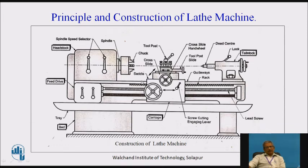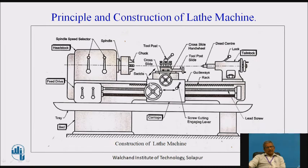The carriage is made up of different parts: the apron or apron box, and the saddle — which has a V-groove on one side and a flat surface on the other, preventing perpendicular movement. When we move the carriage with the carriage wheel, it travels parallel to the axis using a rack-and-pinion arrangement, moving the carriage towards the headstock or tailstock. On the saddle, there is a cross slide operated by a cross slide wheel; rotating it clockwise or anticlockwise moves the cross slide perpendicular to the axis.